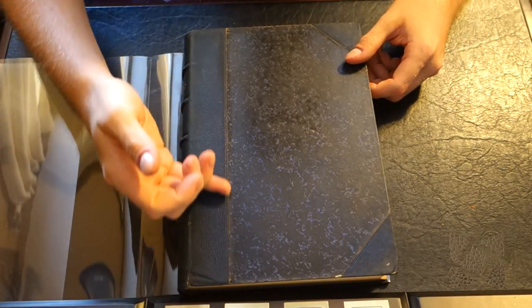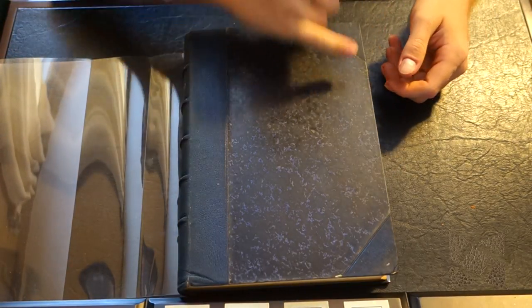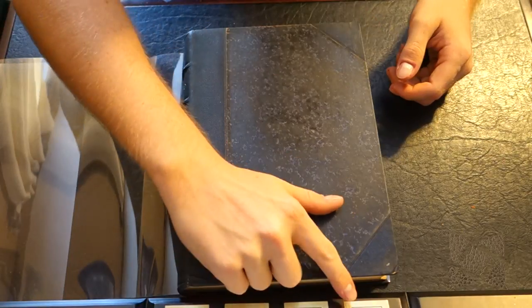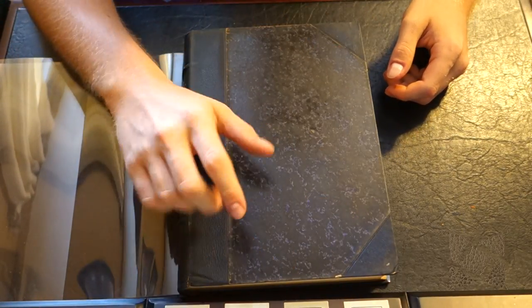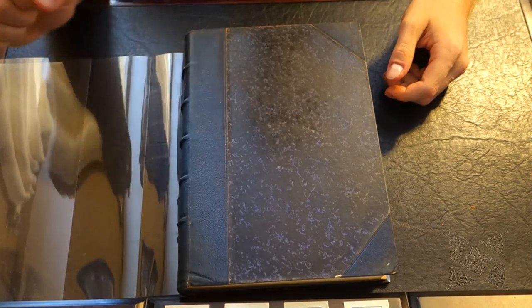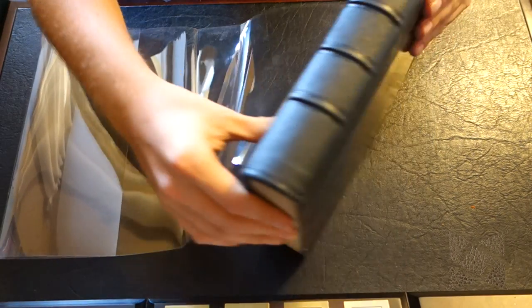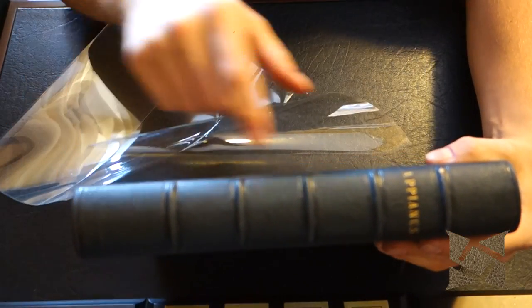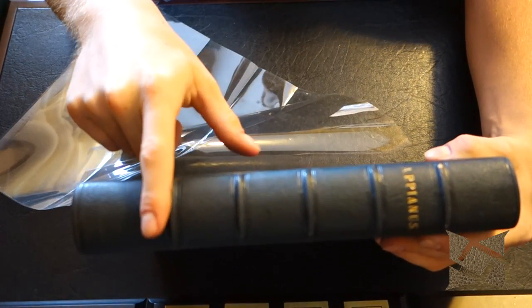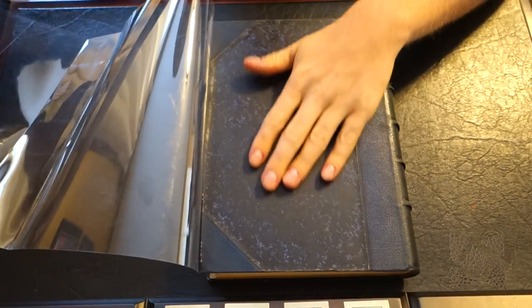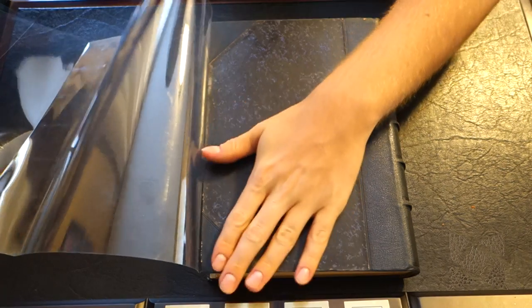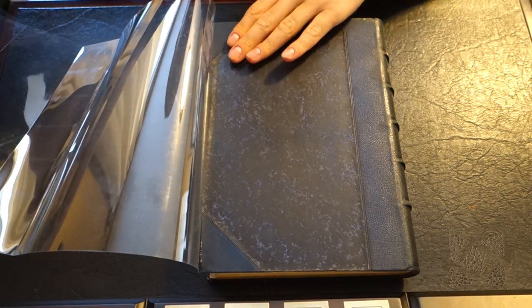So it is quarter bound in blue leather with the corners rounded in the matching blue leather, and then the front covers are a blue-black marbled paper. You saw the spine has five raised ribs on the spine, and the back matches the front with the blue marbleized paper here and the corners in leather.